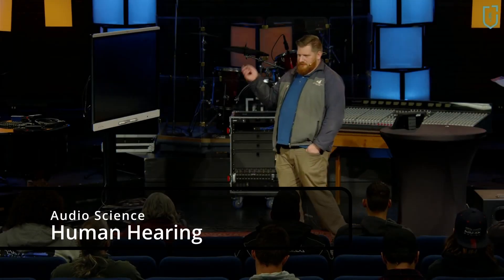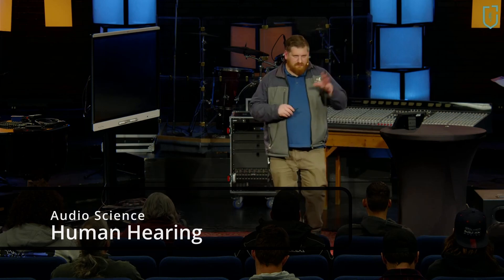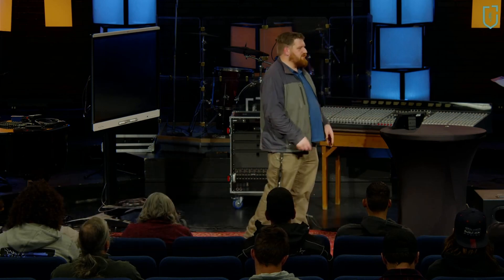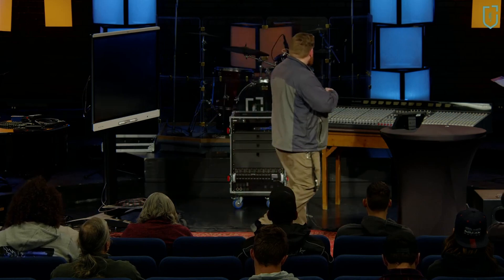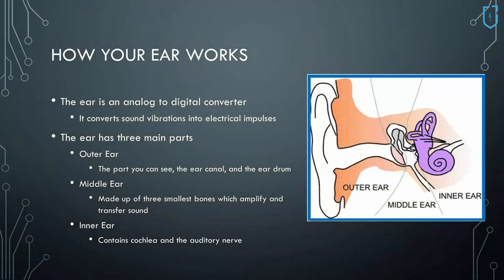Let's get into human hearing. We've talked about decibels, how we measure sound, and the sound waves themselves. This is how they interact with the ear. The ear is an analog-to-digital converter — it takes analog sound pressure waves and turns them into electrical energy running to your brain.